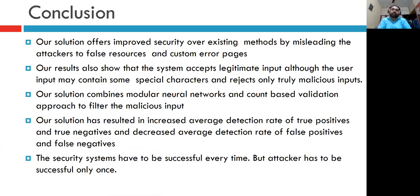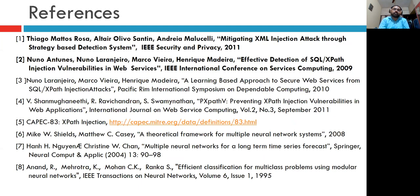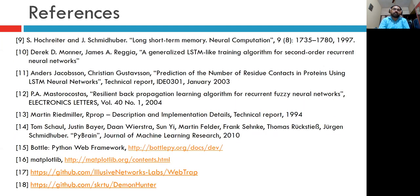The conclusion is that our solution offers improved security over existing methods by misleading attackers to false resources and custom error pages. Results show the system accepts legitimate input even when it contains some special characters, and rejects only truly malicious inputs. The solution combines modular neural networks and count-based validation to filter malicious input, resulting in increased average detection rates of true positives and true negatives, and decreased false positives and false negatives. Security systems have to be successful every time, but an attacker only needs to succeed once — through deception, we are buying extra time to protect our resources from hackers.